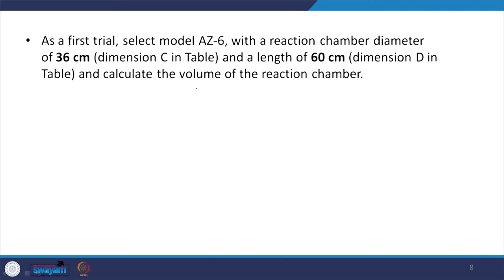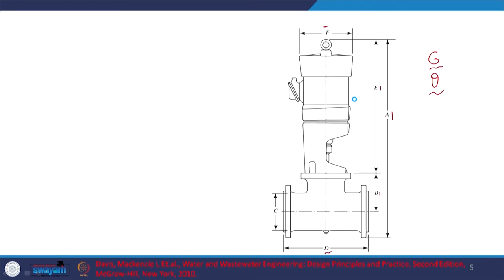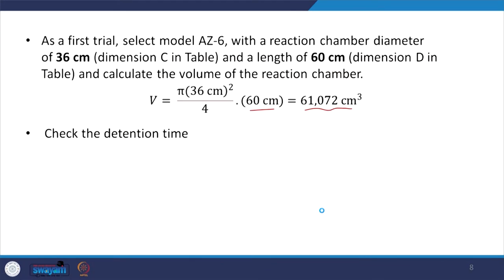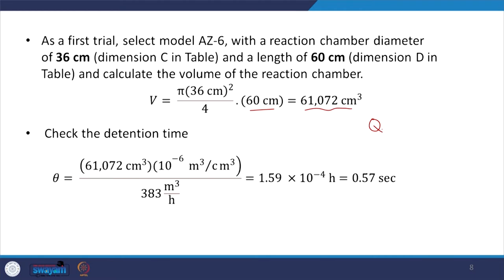We are selecting dimensions C and D inside the chamber. We can calculate the chamber volume as pi·D²/4·h, and we get the relevant volume from the table. Then the retention time: theta equals V divided by Q. Playing around with the units gives us 0.5 seconds. For adsorption coagulation we want theta to be 0.5 to 10 seconds, so 0.5 seconds is more or less fine.